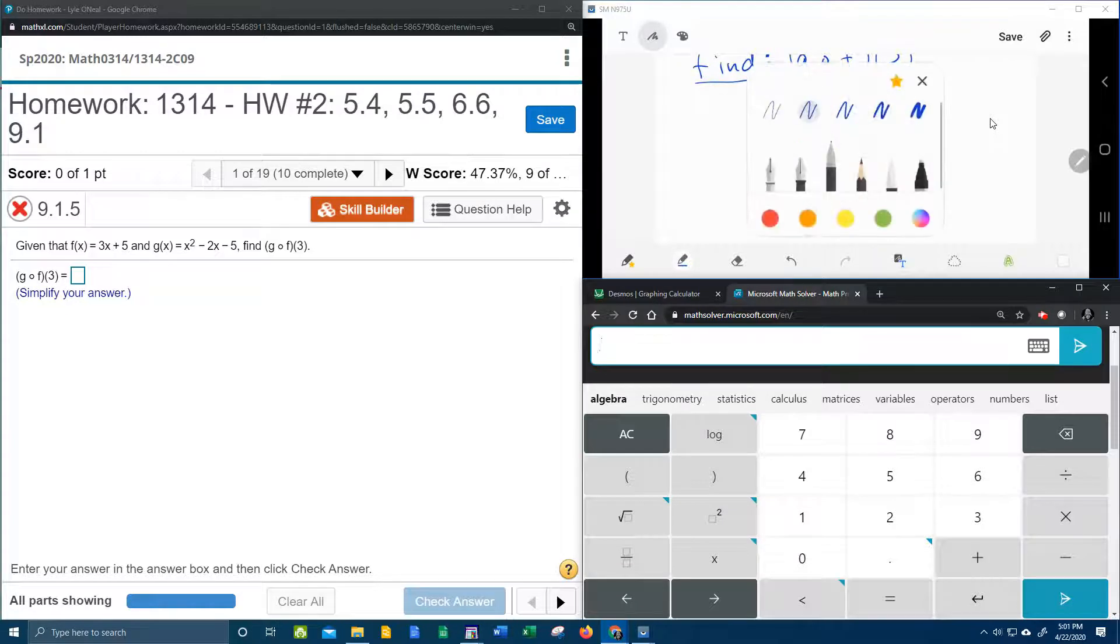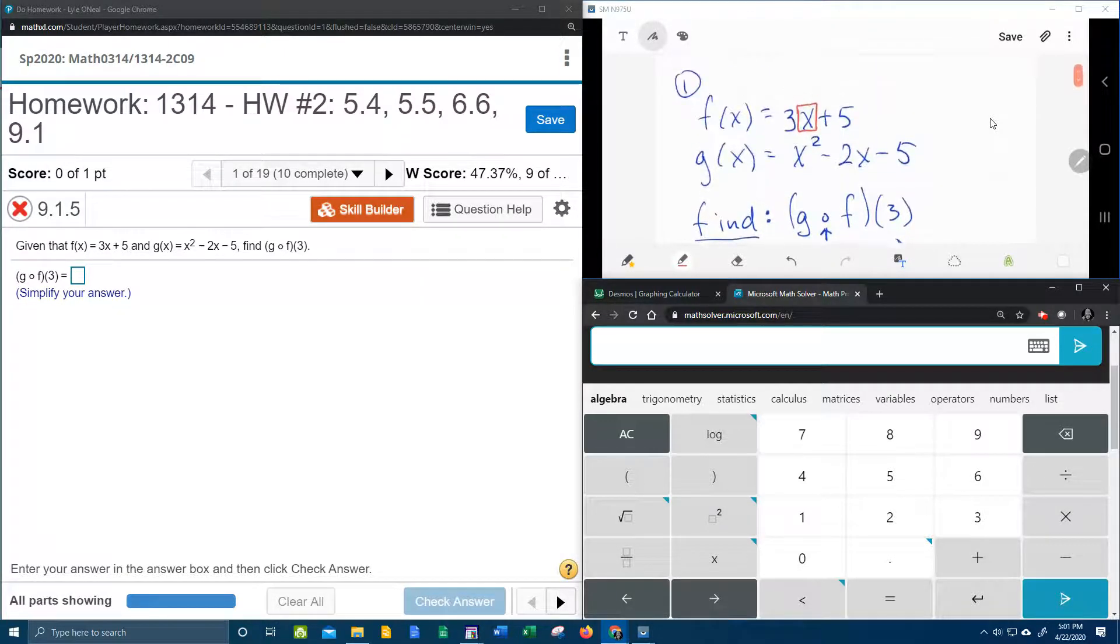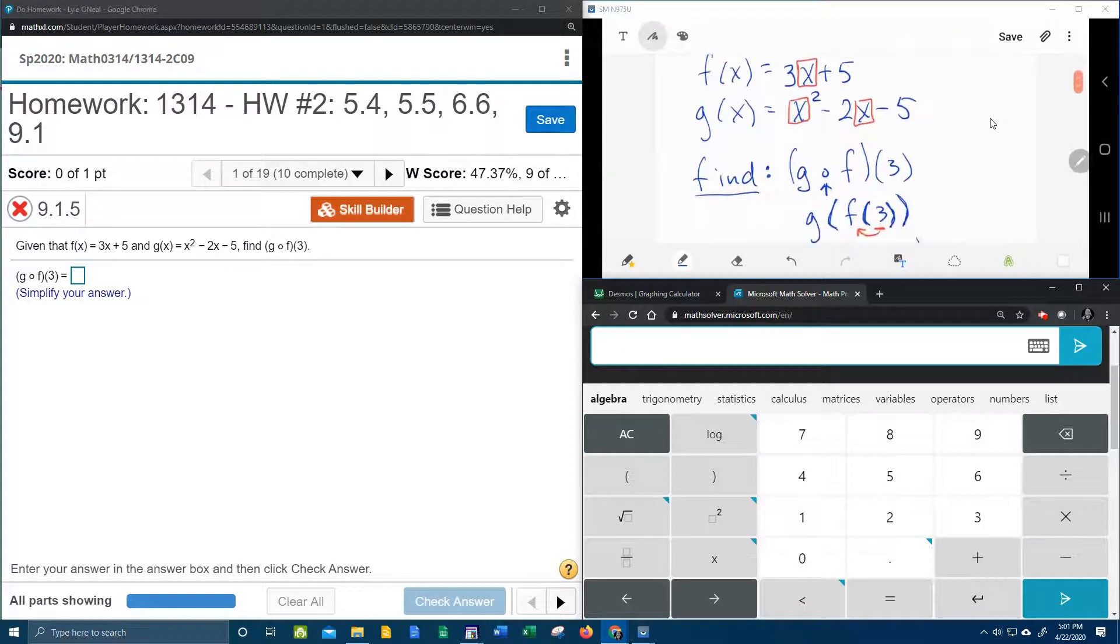And the next step is to plug that 14 into g. So we're going to come up here to g of x. Everywhere there's an x, that's going to get replaced with 14. So that's going to be 14 squared minus 2 times 14 minus 5.